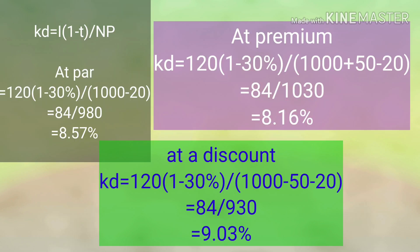Comparing the three costs of debentures, we can see that the cost is minimum when issued at a premium and maximum when issued at a discount. The reason is that interest is paid on the face value in all situations. So when we receive more money, our cost of capital is minimum, and when we receive less money, our cost of capital is higher.